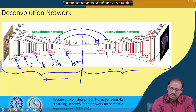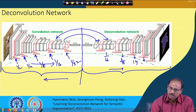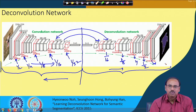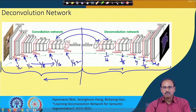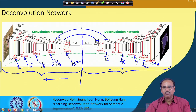Conversely, after the first unpooling the size becomes 1/16, after the second it becomes 1/8, after the third 1/4, and after the next unpooling 1/2. After the final unpooling, the feature map or level map size becomes the same as the original image size. This gradual upsampling avoids the problem of fixed receptive field size that was present in the fully convolutional neural network.